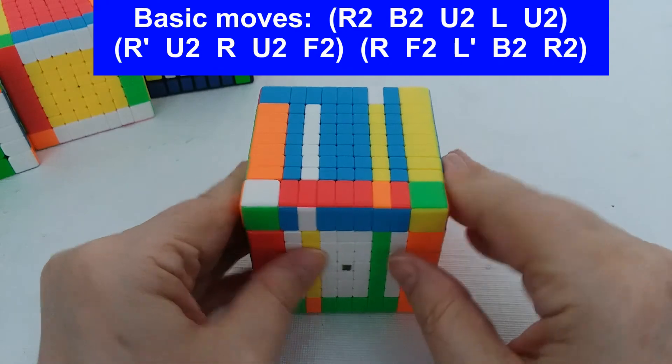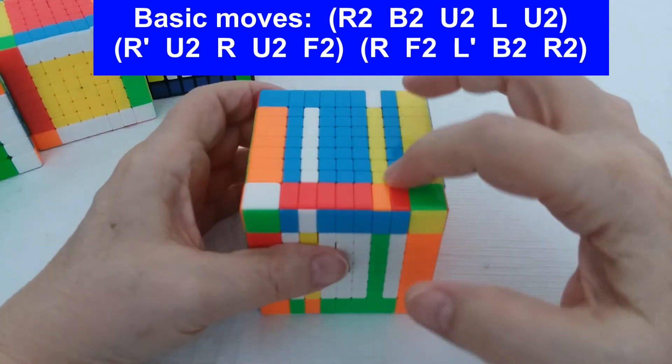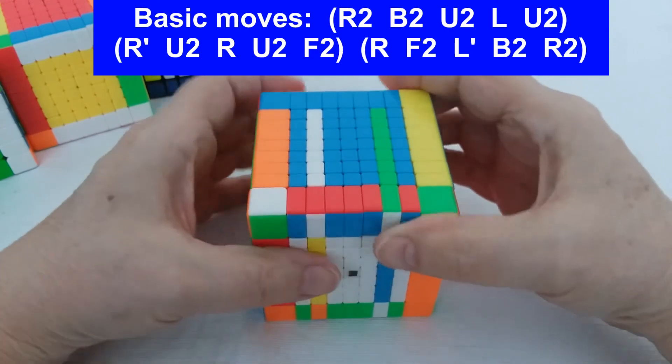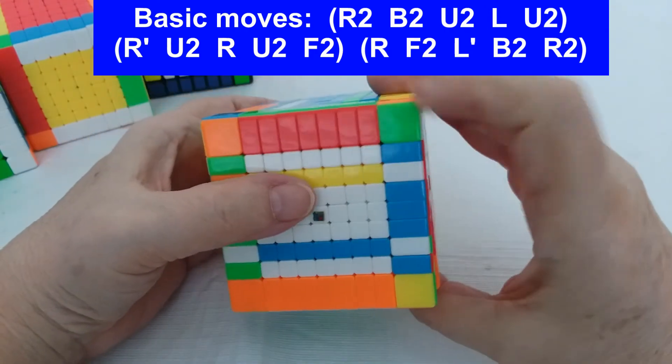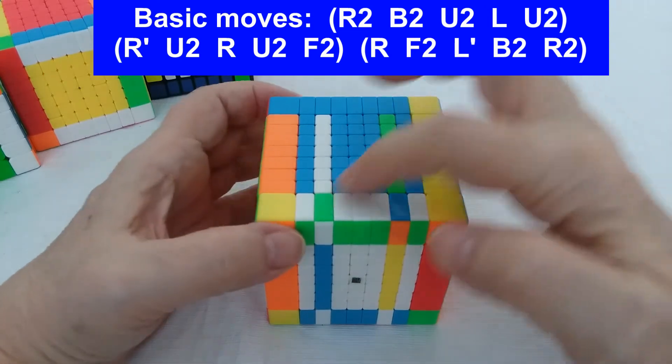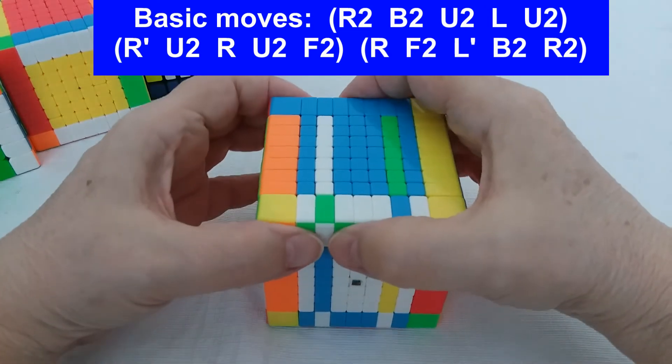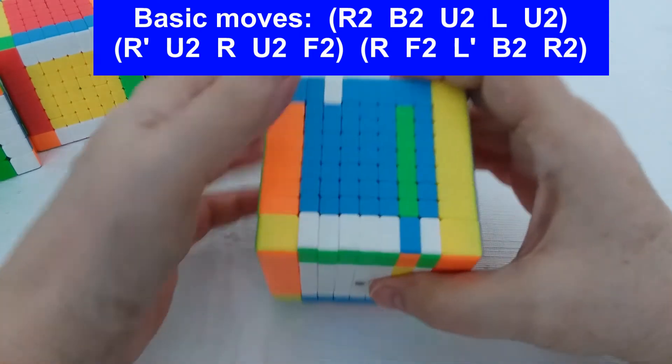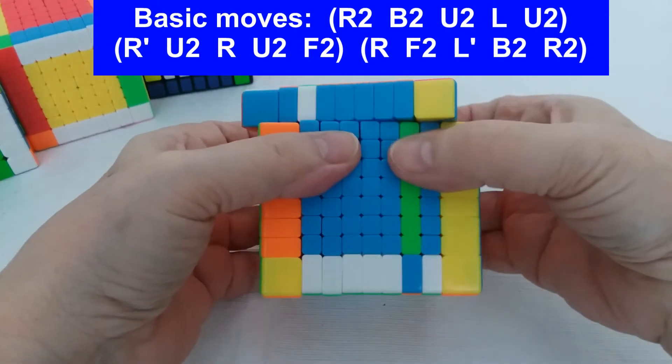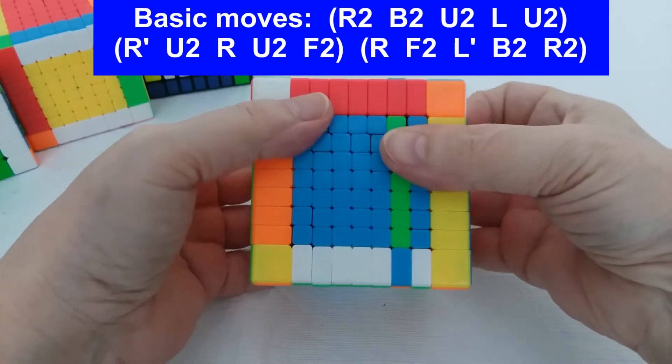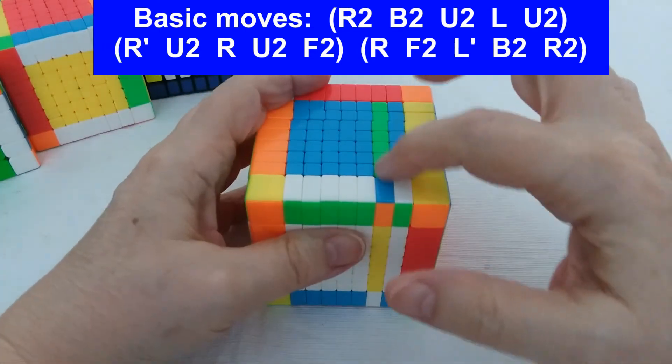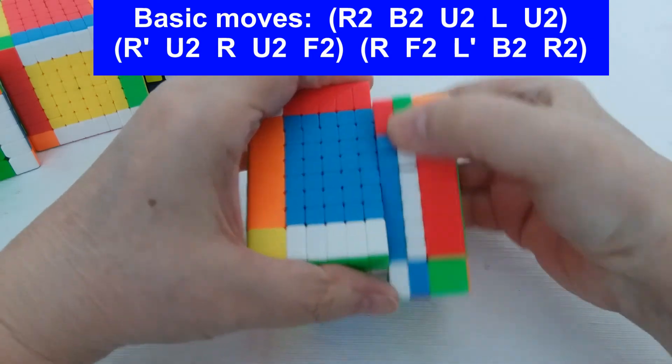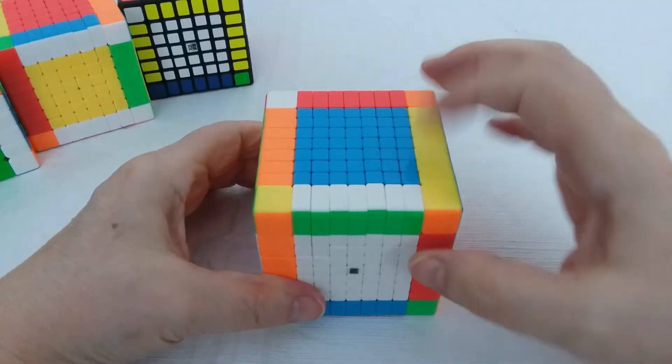And then the last five: R back home so it's just that one, F2, L back home so it's just that one, B2, and then R around twice so it's just that one. And we've solved that.